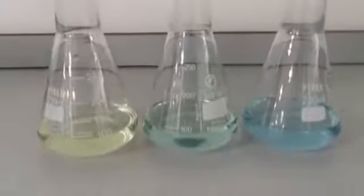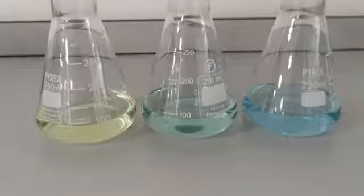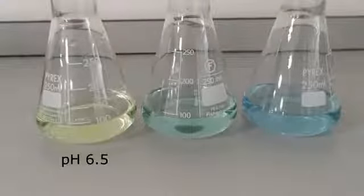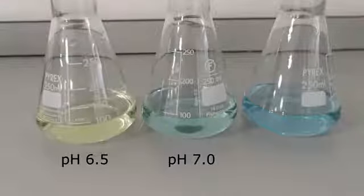For reference, these conical flasks show different stages of the endpoint. On the left, we see pH 6.5. As you can see, it's a more yellow colour still. In the middle, we have pH 7, which would be the perfect point to stop the titration. On the right, we have pH 7.5, which would indicate that you've added too much sodium hydroxide to the solution.